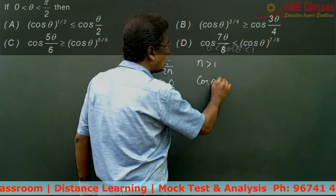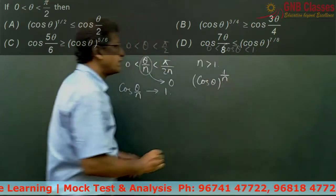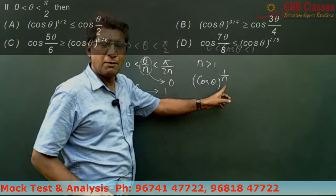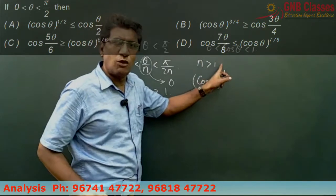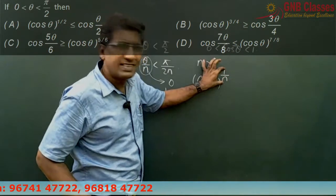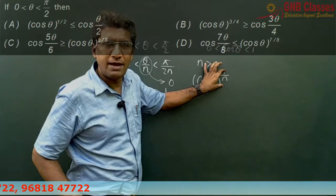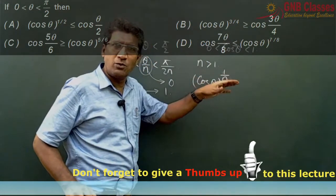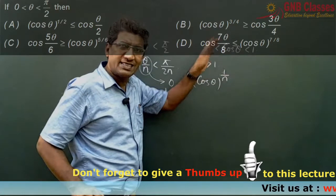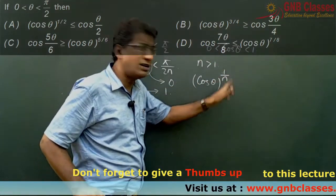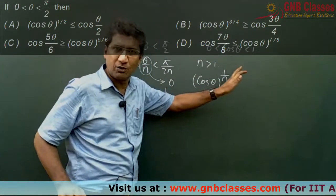Cos theta whole to the power 1 by n. Now if I take 1 by n, think about it. Higher the value of n, lesser will be 1 by n. Now cos theta is lying between 0 and 1, and the power is lesser, means the power is almost approaching towards 0.